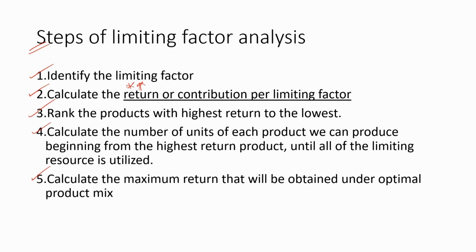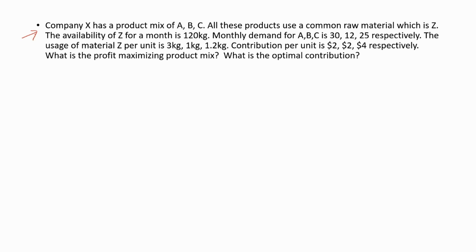Now let's do an example question. Company X has a product mix of A, B, and C, which means there are more than one product they are producing. All these products use a common raw material, Z. The availability of Z for a month is 120 kg. We don't know yet whether Z is a limiting factor — we have to calculate and see.